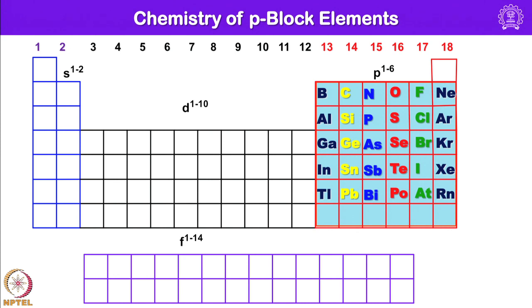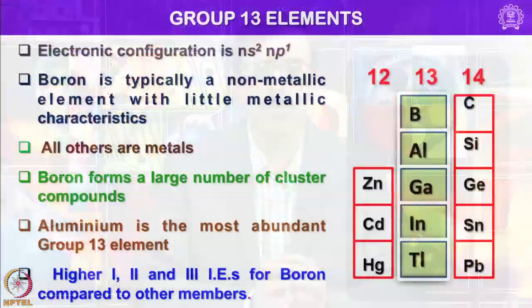Group 13 elements have valence shell electronic configuration of Ns²p¹, meaning they have 3 electrons in their valence shell. Boron is typically a non-metallic element with little metallic characteristics and the rest — aluminum, gallium, indium, and thallium — are all metals. Boron forms a large number of cluster compounds known as boron hydrides, and one can also incorporate other p-block elements.